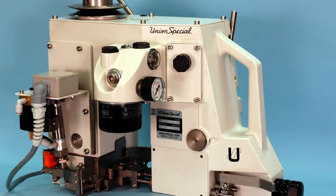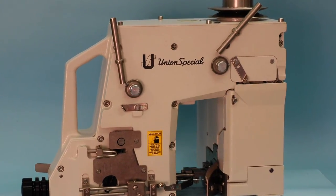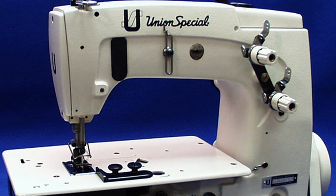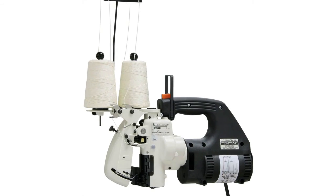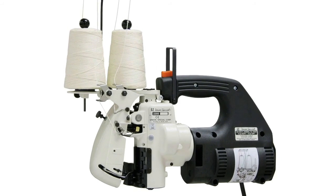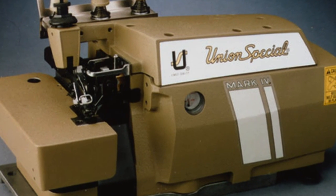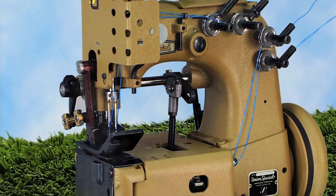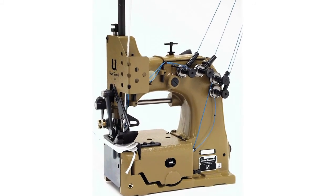Union Special's key products include our BC200 bag closing machine, our 56100 flatbed sewing machine, our 2200 portable sewing machine, our 39500 overlock machine, and our 80,000 series bag closing and bag-making machines.